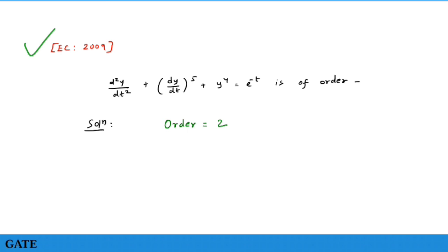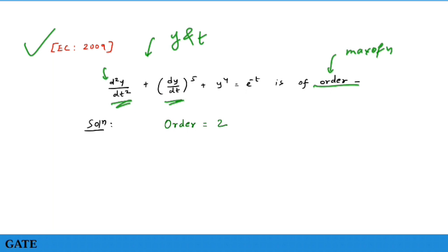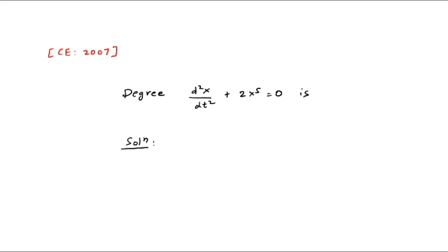GATE Telecom 2009: d²y/dt² + (dy/dt)^5 + y⁴ = e^(−t). This is an ordinary differential equation. They ask only for order: the maximum n is 2 (from d²y/dt²), so order = 2. If asked for degree, the power of d²y/dt² is 1, so degree = 1.